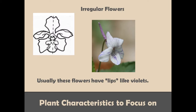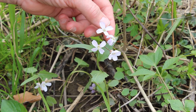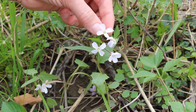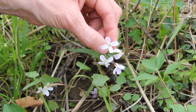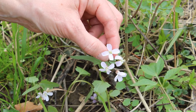Irregular flowers are not radially symmetrical. The petals or petal parts are not similar in size or shape. Usually these flowers have a lower lip, like you see in violets or plants in the pea family. Here we have spring cress. The flower has four petals arranged around a central disc, and they are the same size, shape, and color. This is an example of a regular flower.